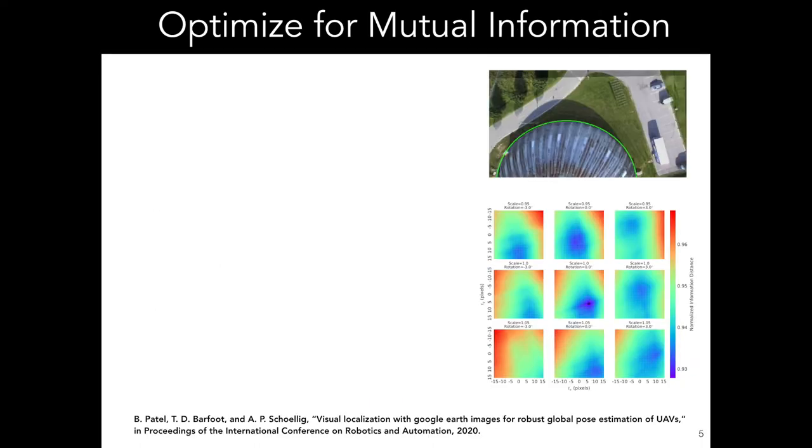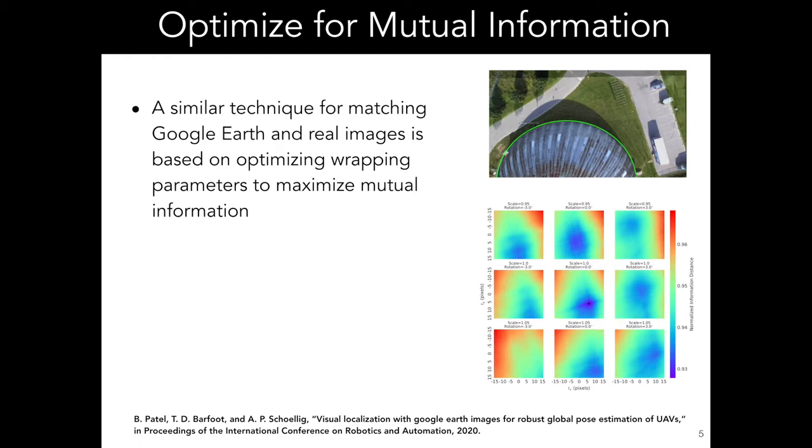The most similar technique for matching images from Google Earth to live UAV images uses an optimization over mutual information to search for the ideal warping parameters between a live image and a reference image selected from a map of thousands. This method was able to obtain very good results, and you can see an example of the achieved alignment in the image overlay on the right. They were able to achieve root mean squared errors of less than three meters on a dataset consisting of real UAV images collected at different times of day.